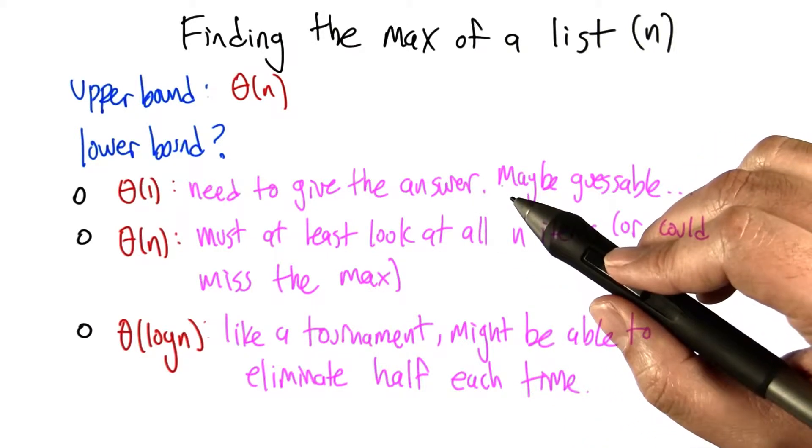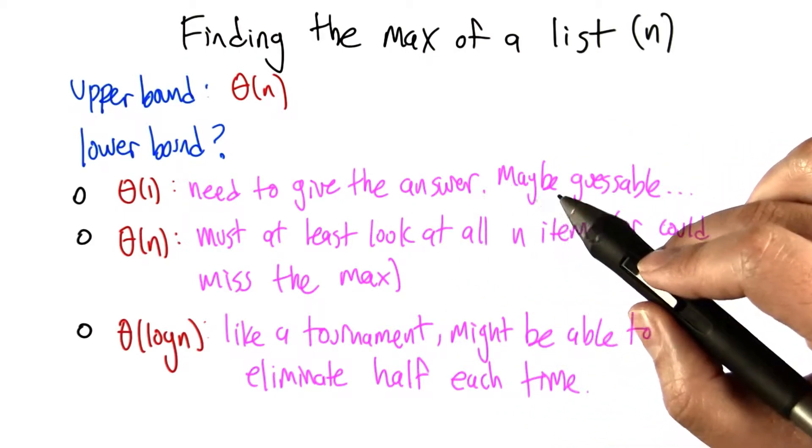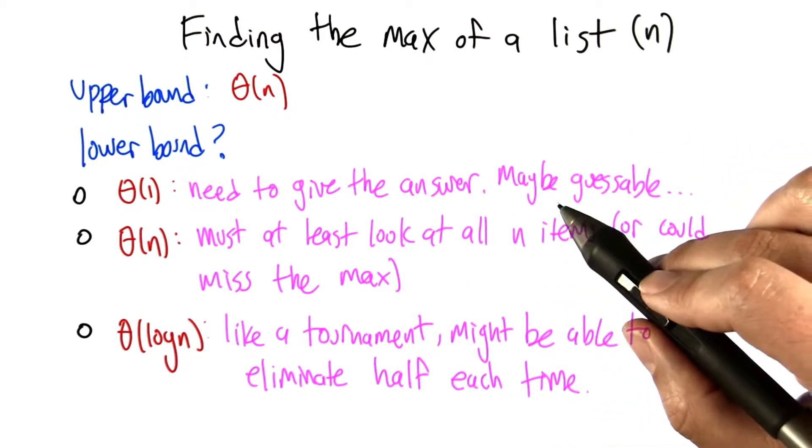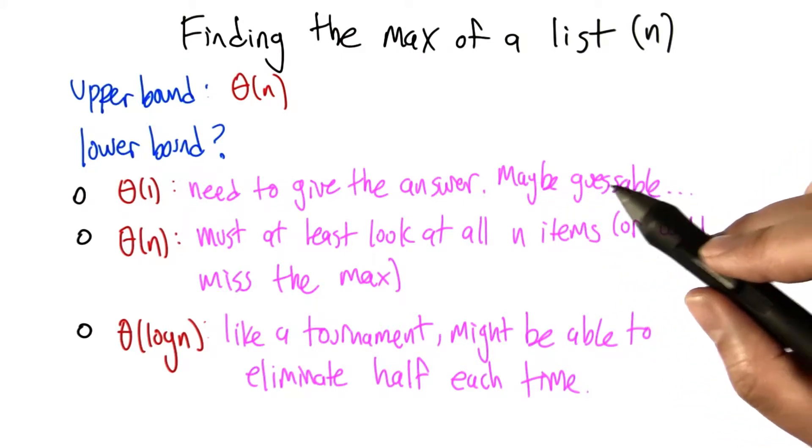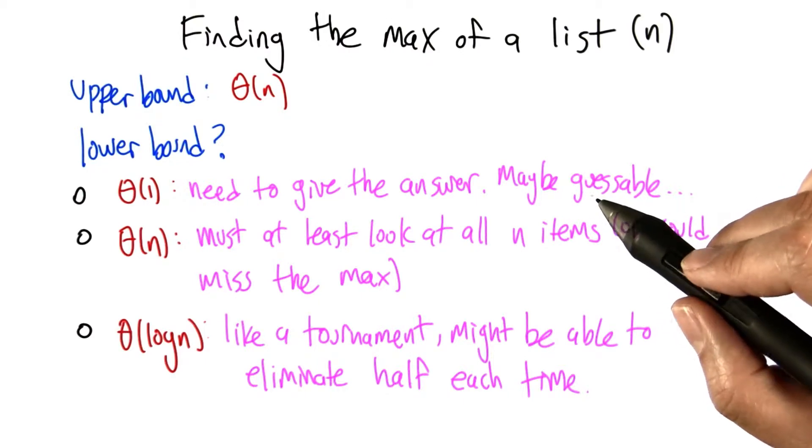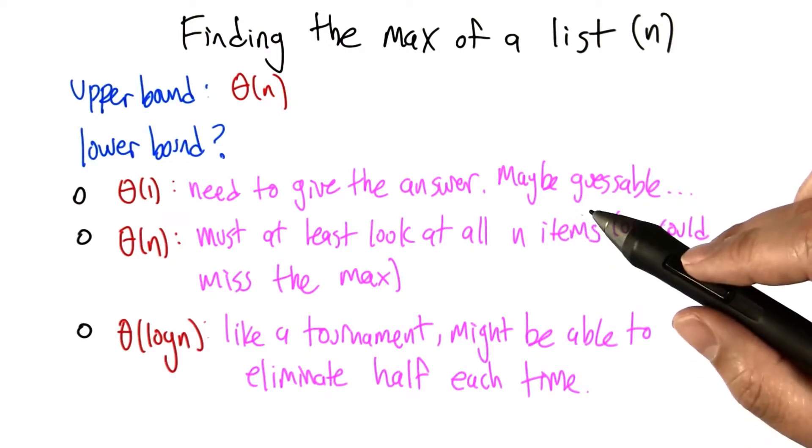It turns out all these are sort of right. You really do need to give the answer, but this isn't quite right. You can't guess the answer. If you have an algorithm that just guesses the answers, that algorithm is going to be wrong some of the time. And we're not talking about the complexity of algorithms that are allowed to be wrong. We're talking about the complexity of algorithms that have to be right.